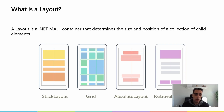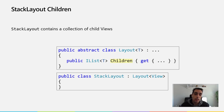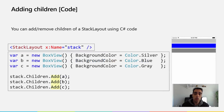We're going to talk about stack layout today. So what is a stack layout? The stack layout arranges children in a single column or a single row — it stacks children vertically or horizontally. The stack layout contains a collection of child views. The main property is the children property, but we also need a way to organize those children in different ways.